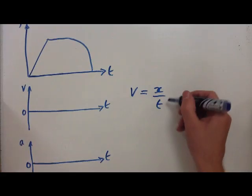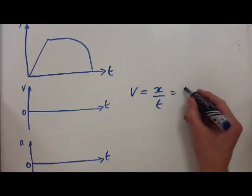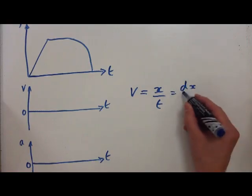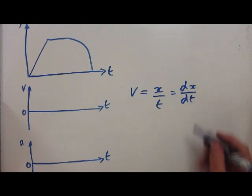We also know that really what that is, x over t. If I had a small amount of x, dx, and a small amount of t, I could write it like that. The d just means a small difference in.